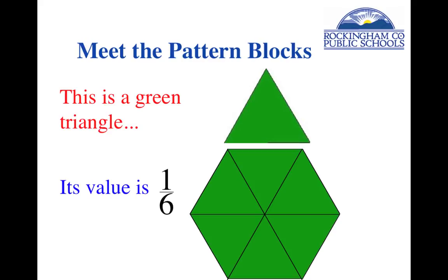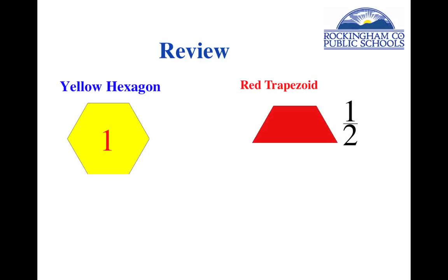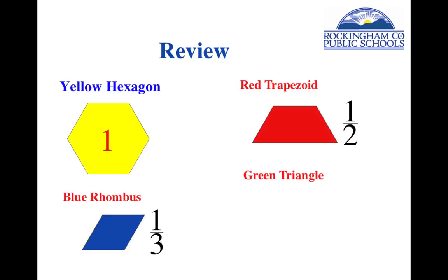So these are the four pieces we're going to work with today. Just as a review: the yellow hexagon has value one, the red trapezoid has value one half, the blue rhombus has value one third, and the green triangle has value one sixth. You might notice that today we're not going to be talking about fractions like one fourth or one fifth, because we don't have pieces in the standard set of pattern blocks that make one fourth or one fifth.